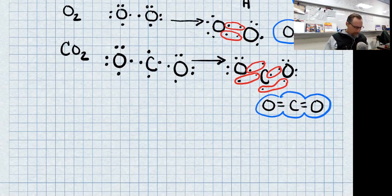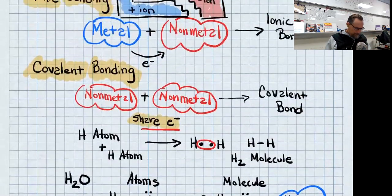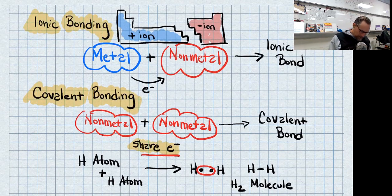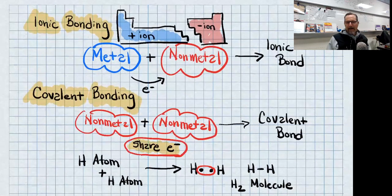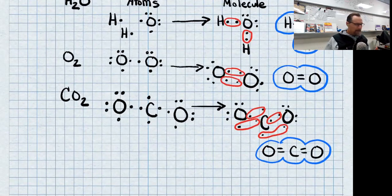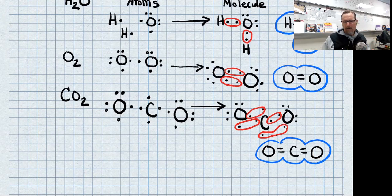When doing ionic bonding, I used an arrow to show the transfer of the electron. When doing covalent bonding, I use a circle because they're actually sharing those electrons. That is a good explanation of what's happening in covalent bonds — how those electrons are being shared and how that allows the molecule to be more stable than it would be as individual atoms. If you have any questions, as always, please just let me know.